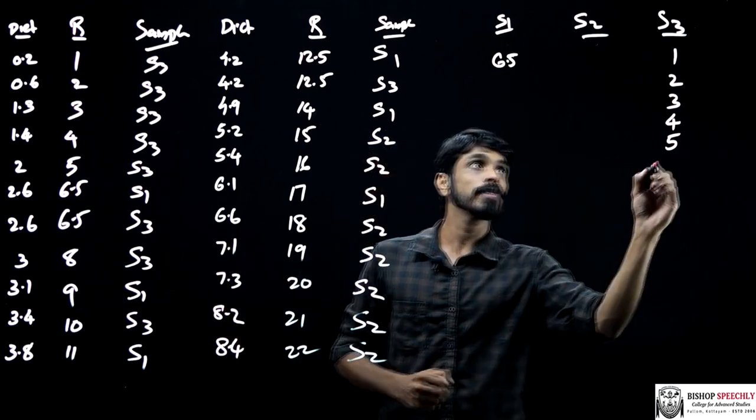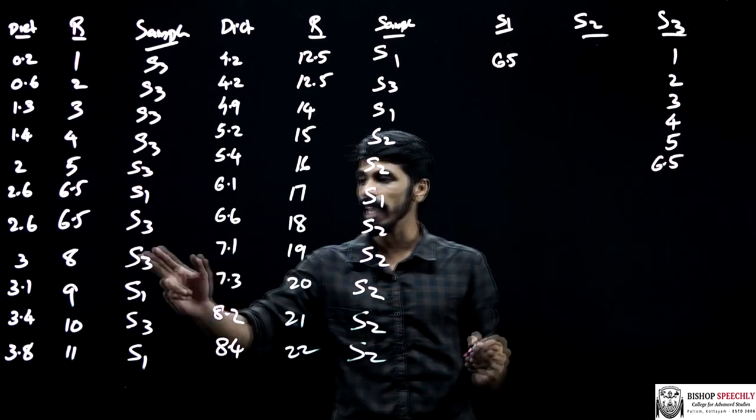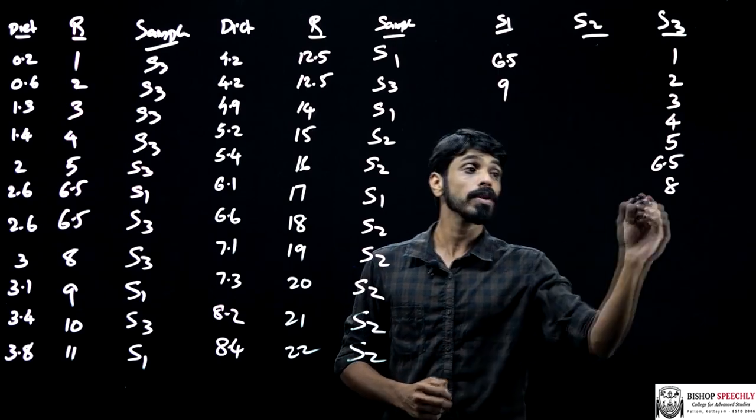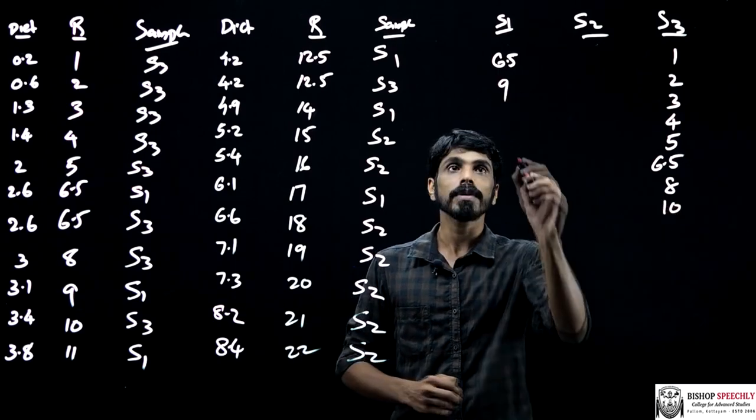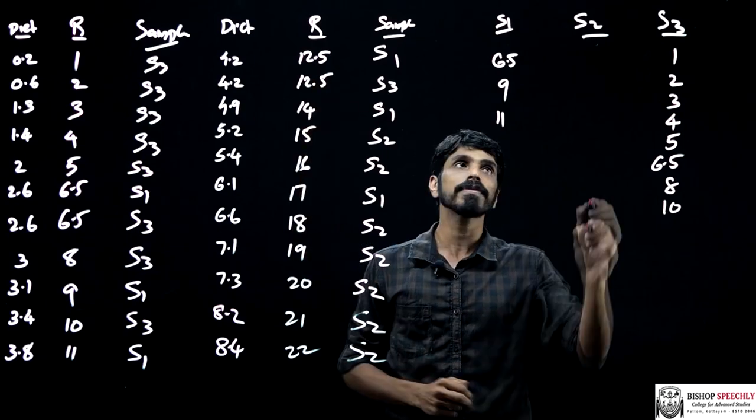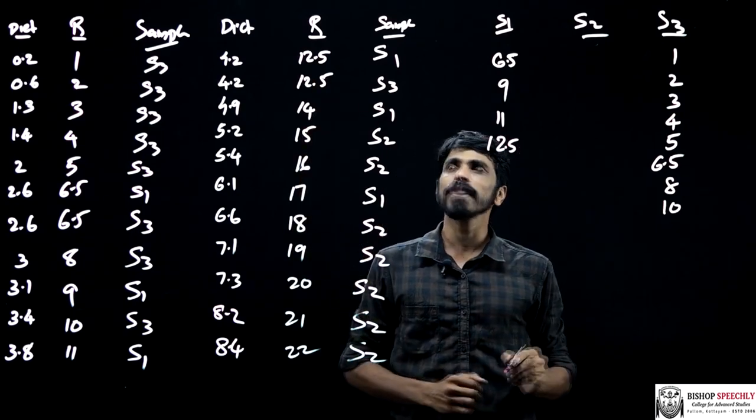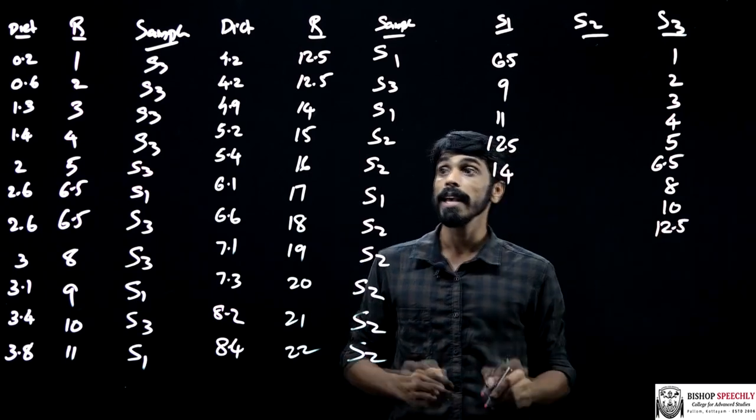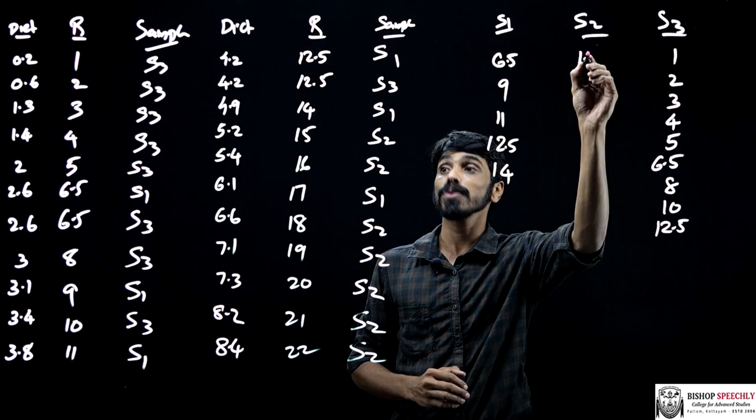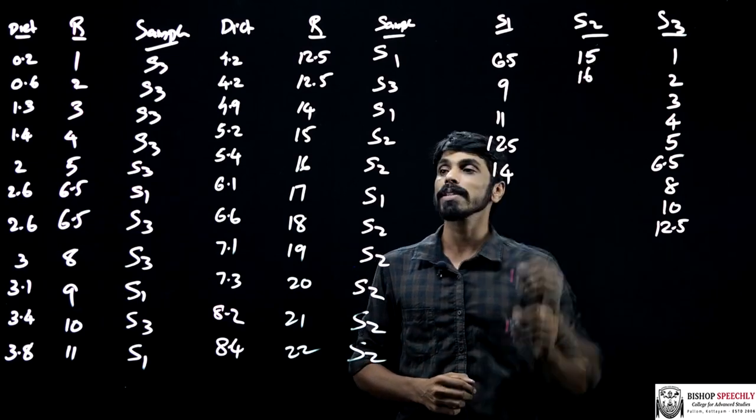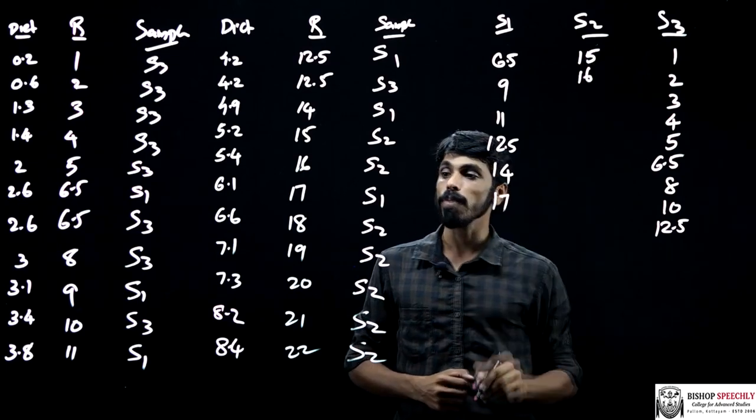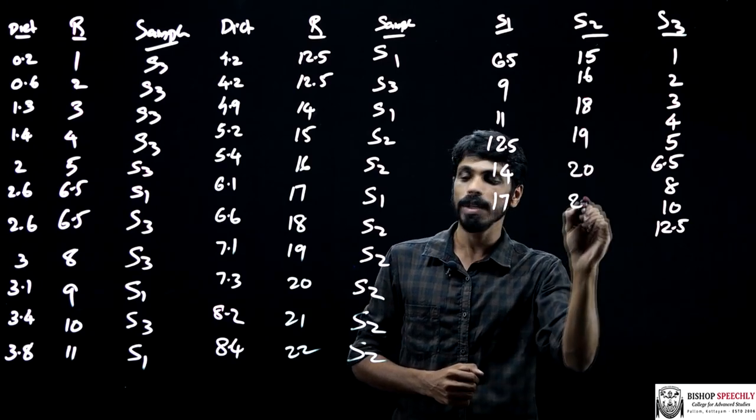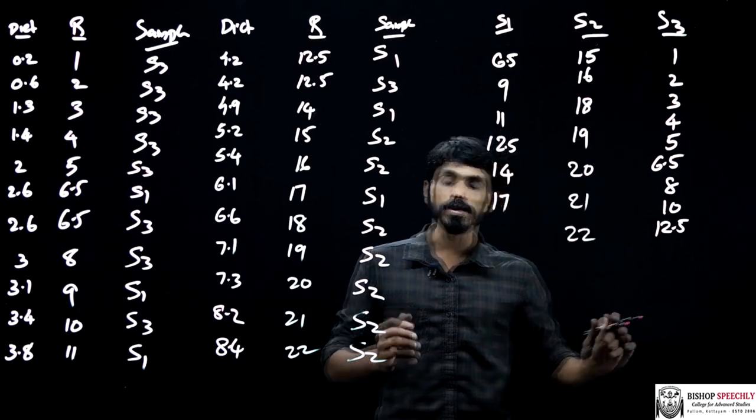11th rank belongs to S1, 12.5 belongs to S1, and 12.5 belongs to S3, 14 belongs to S1, 15 belongs to S2, 16 also belongs to S2, 17 belongs to S1, and 18, 19, 20, 21, and 22 all belong to S2.